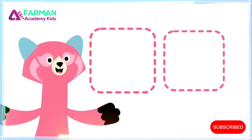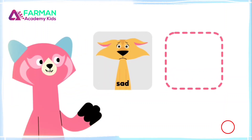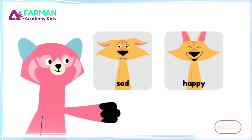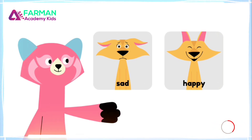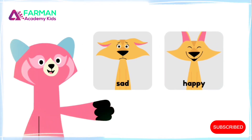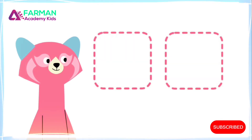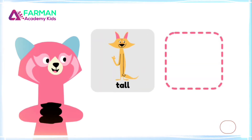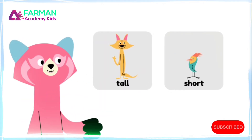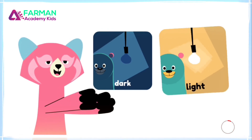Let's learn about opposites. The opposite of sad is happy. If Sandy is happy, she is not sad. The opposite of tall is short, and the opposite of dark is light.